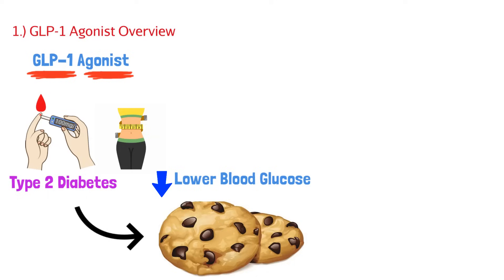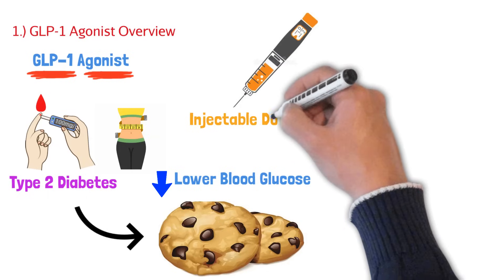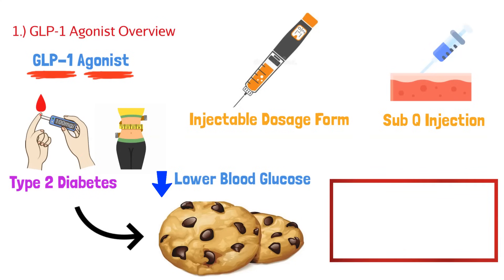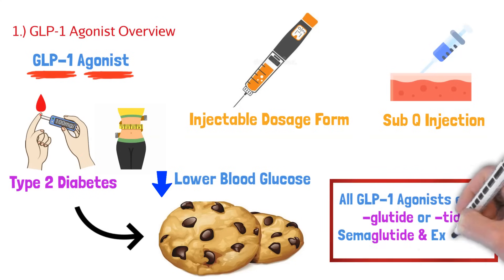It's also important to know how these drugs come. They're primarily injectable and you actually inject it subcutaneously, meaning right under that cutaneous layer of the skin. But there is an exception which we'll talk about that is oral. And the last piece of information is that all GLP-1 agonists, they end in either glutide or tide. So the most popular one, we have semaglutide and we also have exenatide. Now that we have somewhat of an overview of GLP-1 agonists, let's actually talk about how they work and what they do.